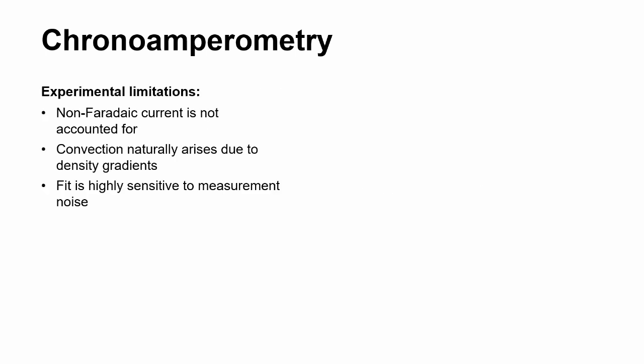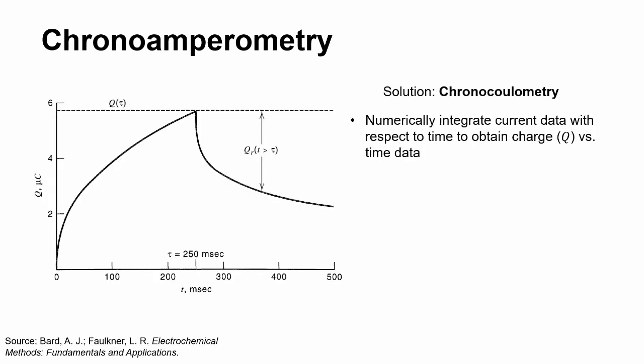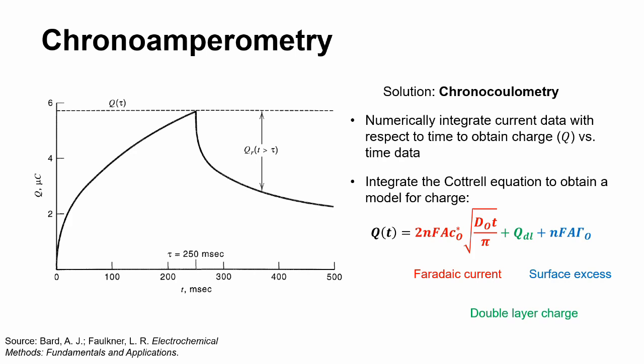However, chronoamperometry is limited by the limitations of the Cottrell equation, and it is also sensitive to measurement noise. One possible solution is chronocoulometry. By integrating the current time data, charge time data can be obtained, which may smoothen out the noise. And integrating the Cottrell equation produces terms that have previously not been accounted for, double-layer charge and surface excess, the latter of which corresponds to the charge of specifically adsorbed ions before the potential step.